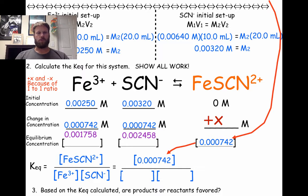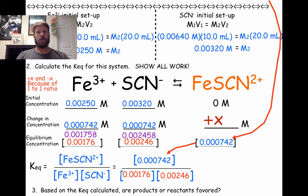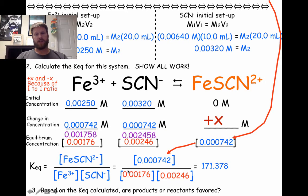We have to follow our sig fig rules. We have a number that's five decimal places minus a number that is six decimal places for both instances of our reactants. That means our equilibrium concentrations can only have five decimal places. After we plug these numbers into our equilibrium expression, we get 171.378. This number can only be three sig figs because the numbers in the equilibrium expression only have three sig figs. So 171 is our final answer.